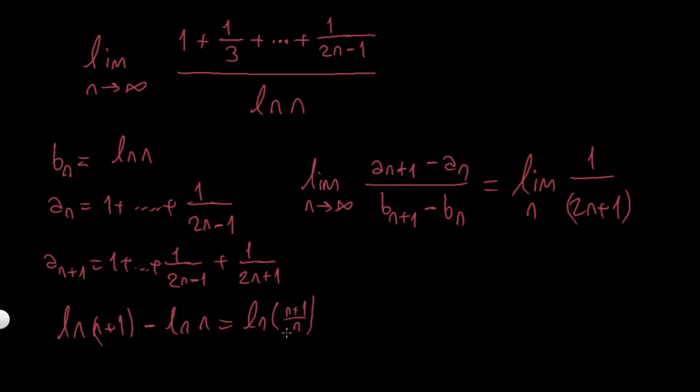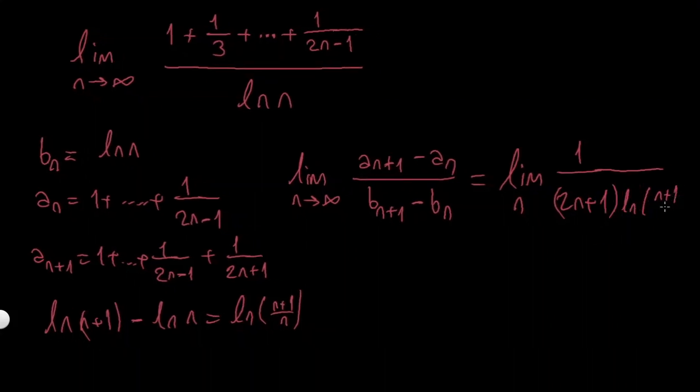ln of (n+1) over n. So let's do it one more step and then I will do what I'm going to do. So I have (n+1) over n.